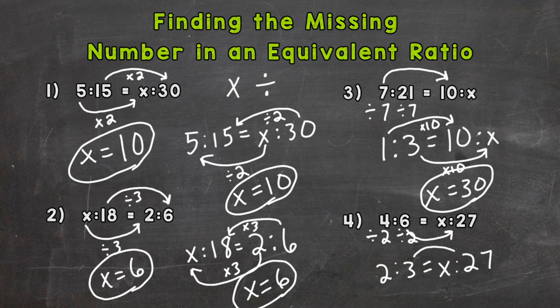How do we get 3 to equal 27? We multiply it by 9. We do the same thing to our 2 to give us that x. 2 times 9 equals 18, so x is going to equal 18.